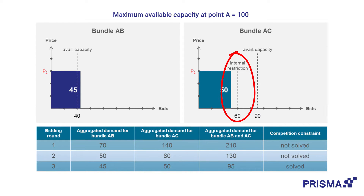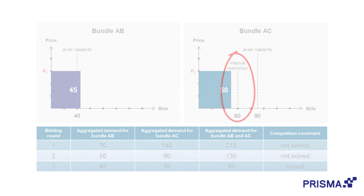If it were the other way around — that bundle AC was in an oversell and bundle AB was in an undersell situation — bundle AC would get the full 90 capacity out of the 100 total, and bundle AB would receive only the remaining 10 as an internal restriction.